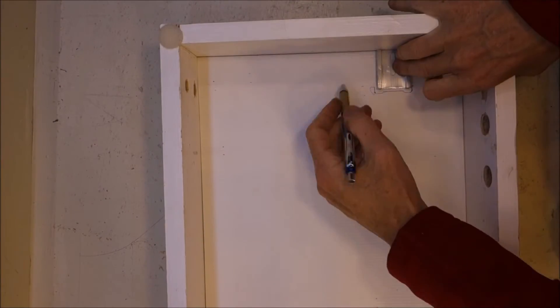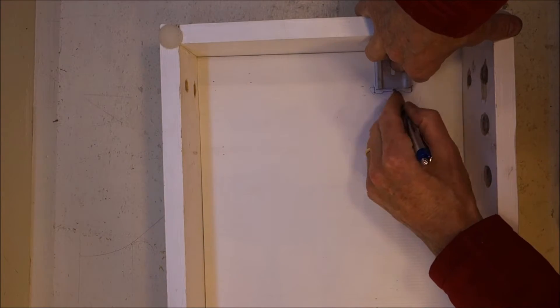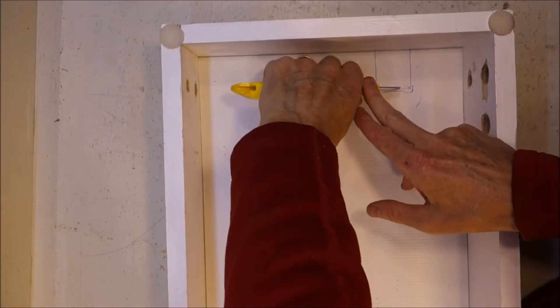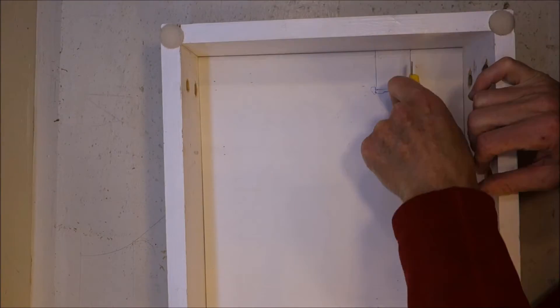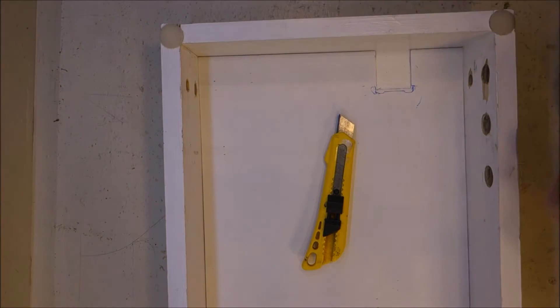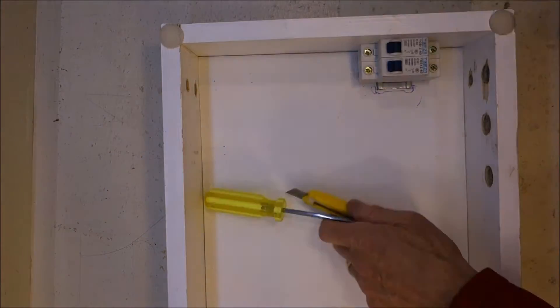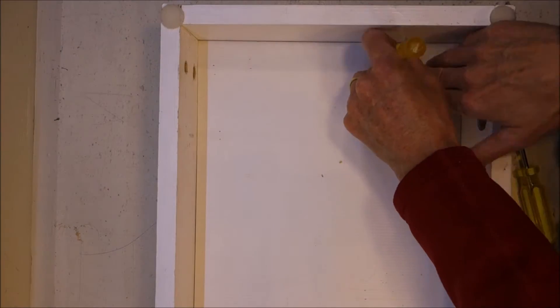The breaker switches are what are known as DIN rail mount switches, so they clip onto a strip of metal which I've cut short, and I'm screwing the piece of metal into the back of the box, which means I can replace or pull out the breaker switches nice and easily using the DIN rail system.